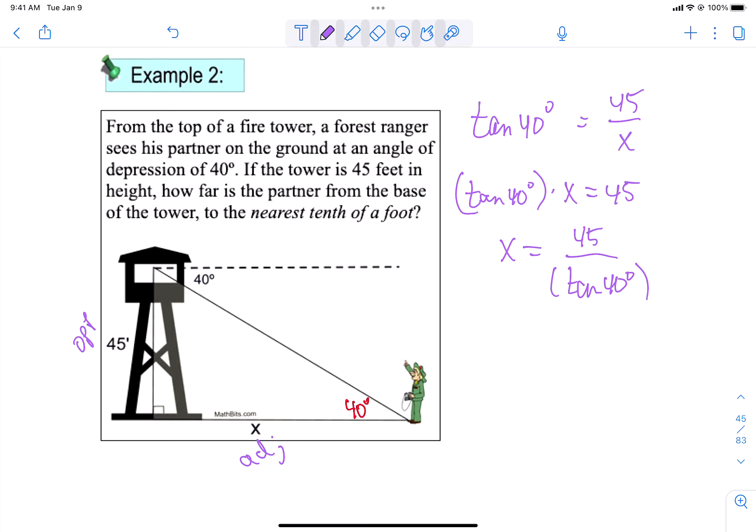So always cross over whatever your thing is. And then that's a multiplication. So what's going to get rid of multiplication? Division. So 45 divided by the tangent of 40 is approximately 53.6 feet. So the forest ranger is about 53.6 ground feet away from the tower.